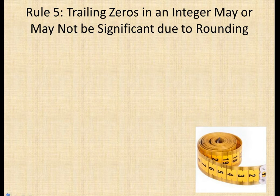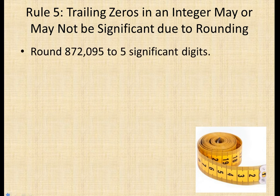Today we're going to look at the fifth rule when talking about significant digits. Rule number five says trailing zeros in an integer may or may not be significant due to rounding.